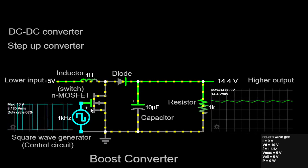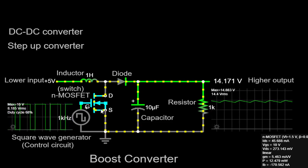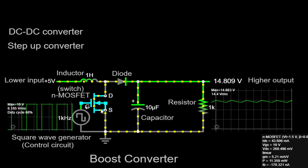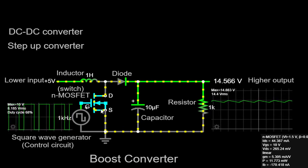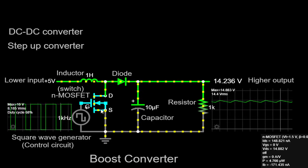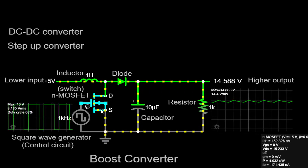When the switch is closed, current flows through the inductor, storing energy in its magnetic field. The energy stored in the inductor is then released when the switch is opened, causing the voltage across the inductor to increase. This increased voltage is then transferred to the output load through the diode and the capacitor.